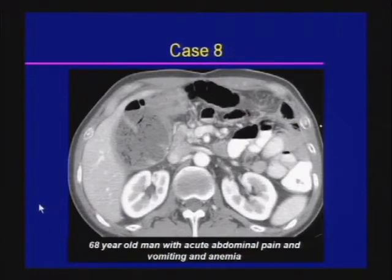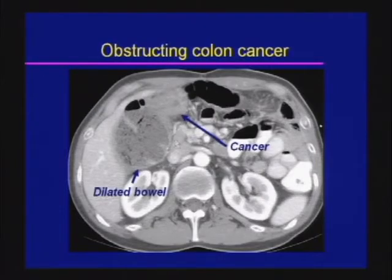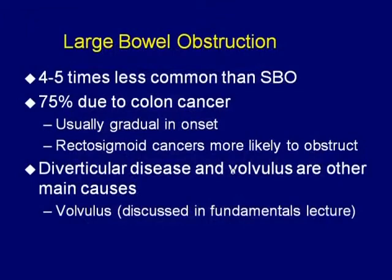Case eight: a 68-year-old man with acute abdominal pain, vomiting, and anemia. The colon shows proximal distension with an abrupt transition where the bowel wall is thickened and the lumen is narrowed — a case of obstructing colon cancer, the CT equivalent of the apple core lesion on barium enema. Large bowel obstruction is significantly less common than small bowel obstruction, and the vast majority are due to colon cancer. Rectosigmoid cancers can present acutely given the narrower lumen and harder stool in that region. Diverticular disease and volvulus are other main causes.